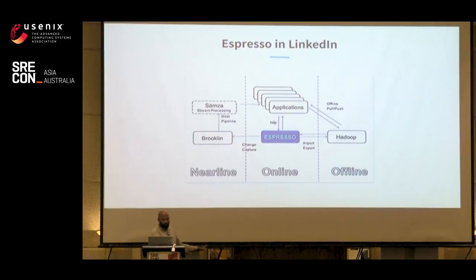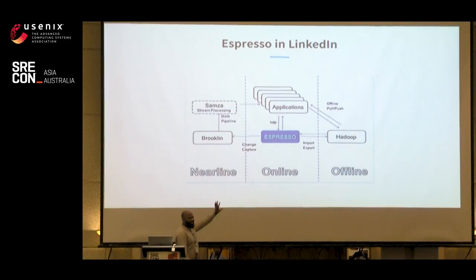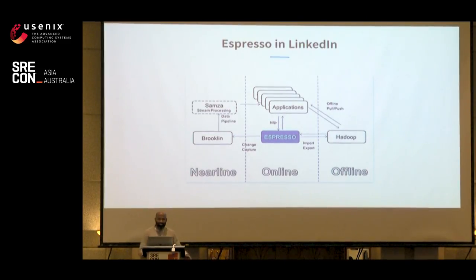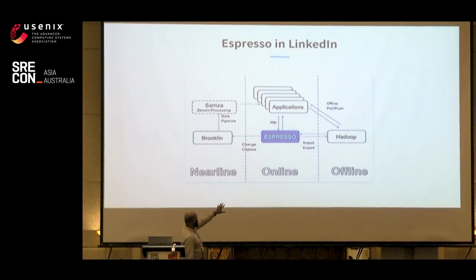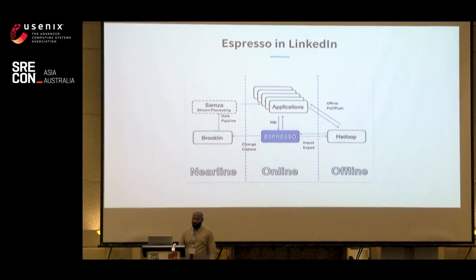This is how Espresso looks on a standard LinkedIn serving architecture. You have a bunch of applications that access Espresso over HTTPS. Espresso takes online reads and writes. It has a change-capture system we internally call Brooklyn, which is based on Kafka. So all changes that come into Espresso can be captured and used by stream processing for near-line serving. At the same time, we have the ability to import and export data into Hadoop for offline data crunching.